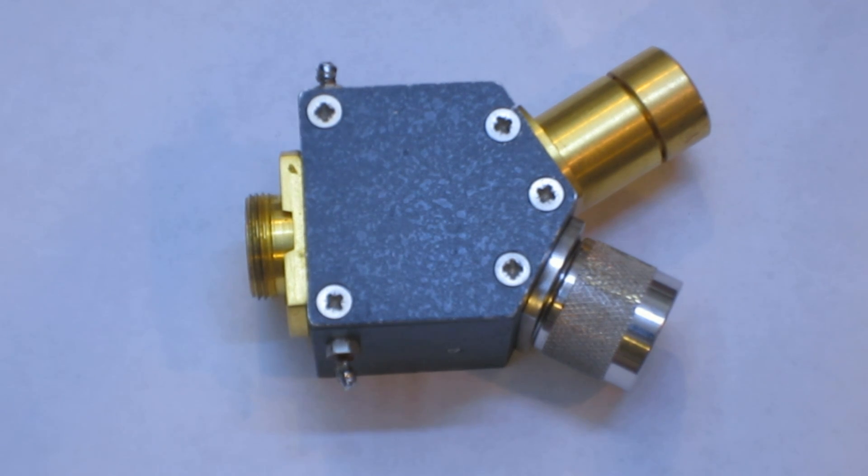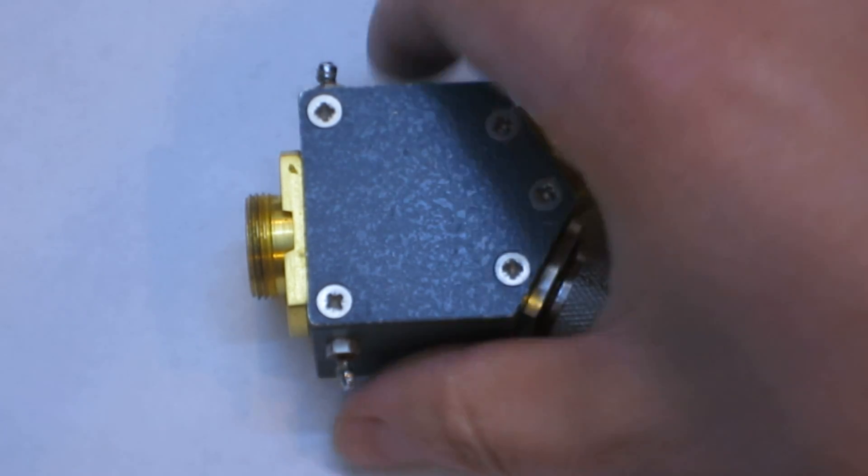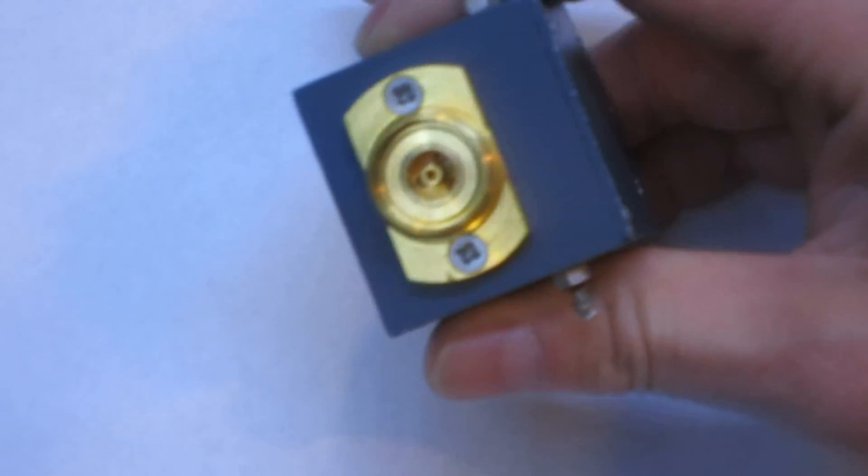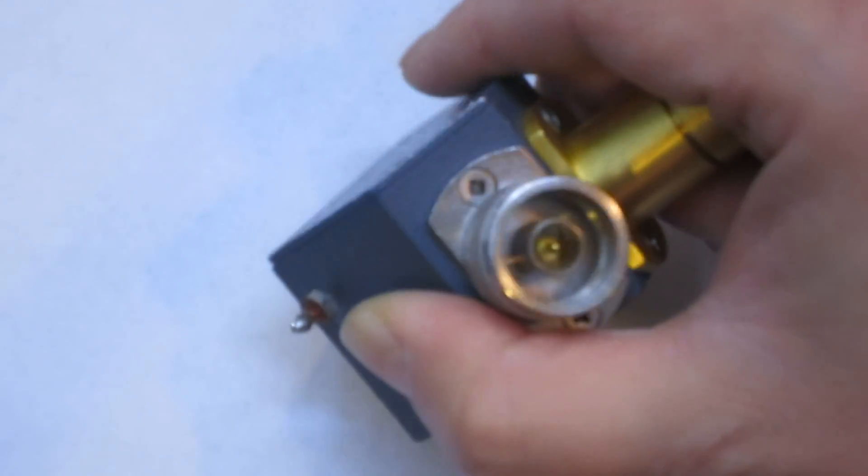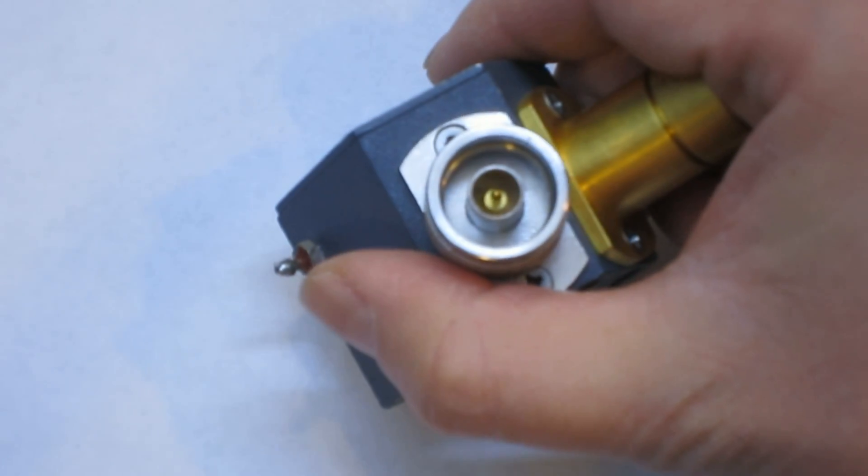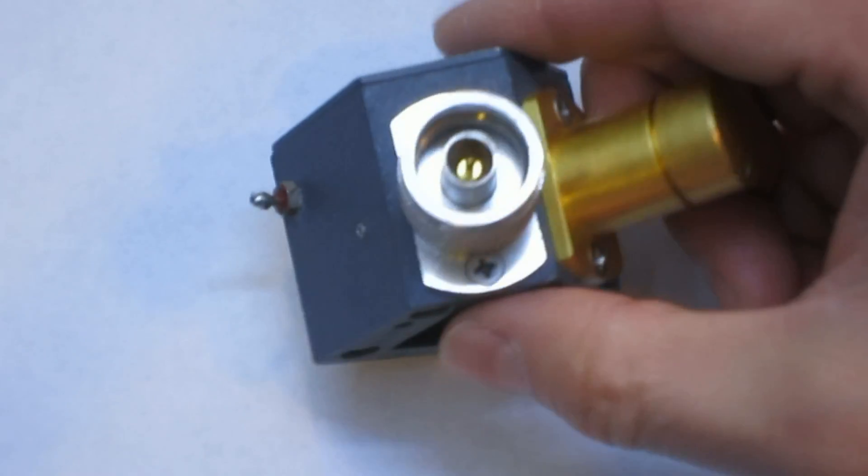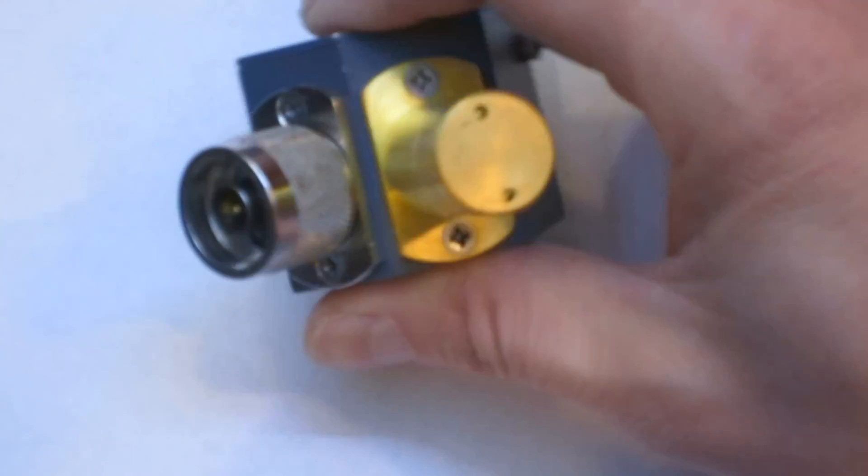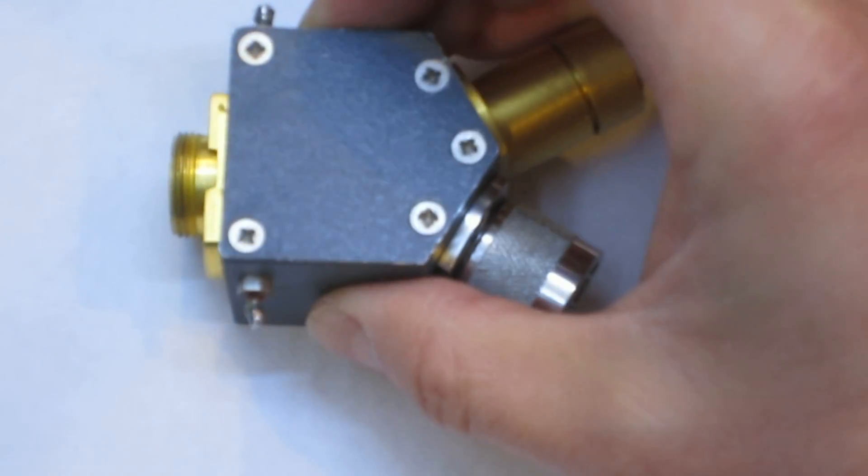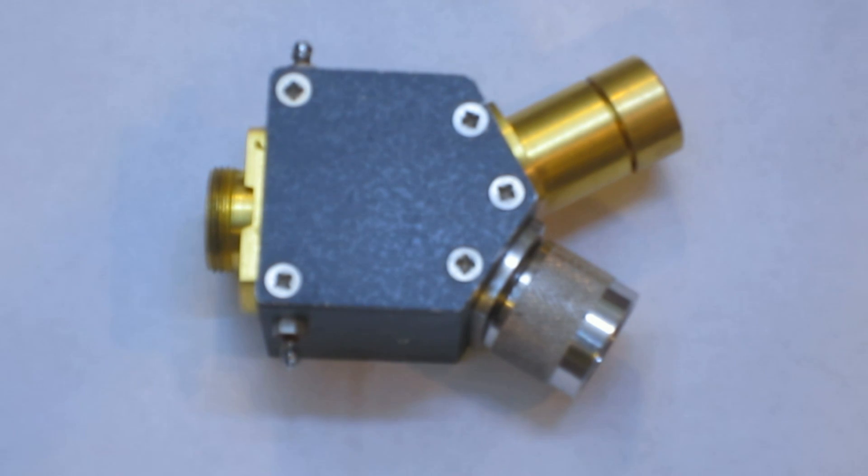Hi, today we're going to take a brief look at how a latching RF relay works. This RF relay is a pretty simple and standard one. One side has an APC7 connector and the other side has an N connector output, with the other side terminated to a 50 ohm load.